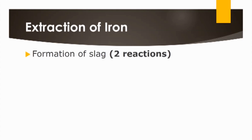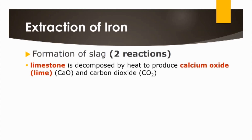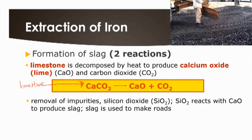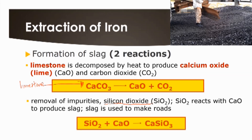The next category is the formation of slag, involving two reactions. First, limestone (calcium carbonate, CaCO₃) is decomposed by heat to produce calcium oxide and carbon dioxide. Next, the impurities in the iron ore — mainly silica (silicon dioxide, SiO₂) — react with calcium oxide to produce slag, which is calcium silicate. Slag can then be used to make roads, as seen in the diagram showing slag materials.